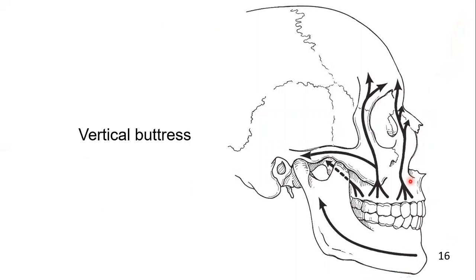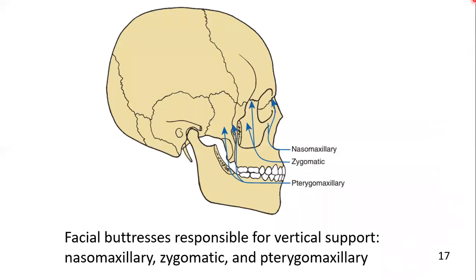Here is another view. This is the nasomaxillary and this is the zygomaticomaxillary, with a component also going across the frontal bone — so this is the frontozygomaticomaxillary, which is also a component of the zygomaticomaxillary system. Here you can also see the vertical mandible. This is another view of the facial buttress system for vertical support.